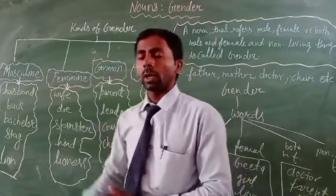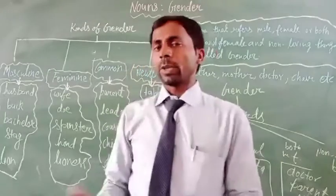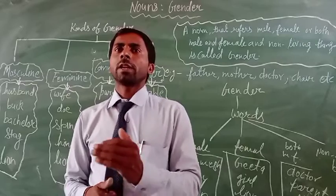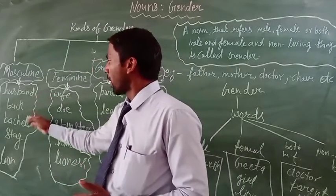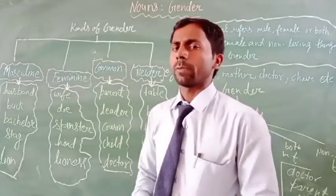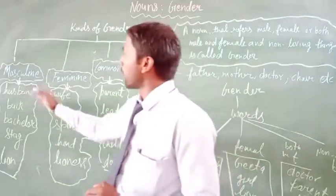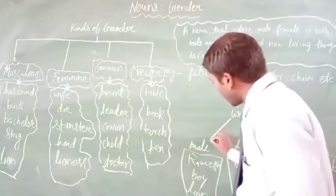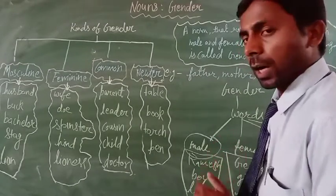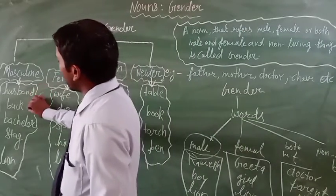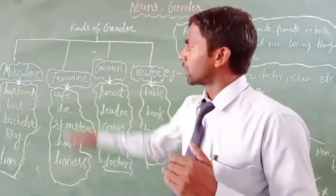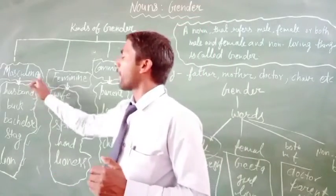What is the definition of masculine gender? Simply, a noun is said to be in the masculine gender if it refers to a male. For example: husband, bachelor, chef, and lawyer. All these words refer to a male person. A noun word that refers to male is called masculine gender. So words like husband, bachelor, chef, and lawyer are masculine gender.